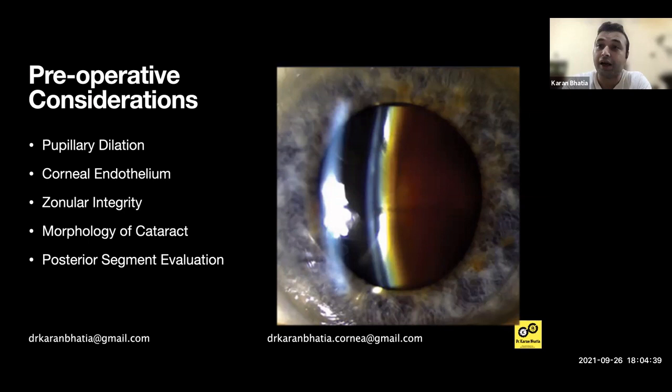Posterior segment evaluation is extremely important because you need to explain the prognosis to the patient. If the fundus is not visible with a 90D or 78D, do an indirect — ideally in all cases. And if there's no view at all, ideally do a B-scan as well. These things should be assessed preoperatively. It's very important.